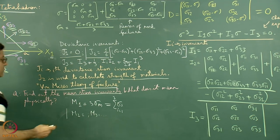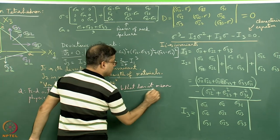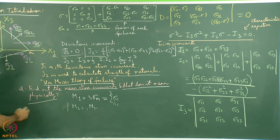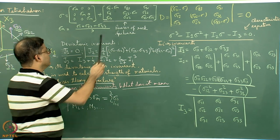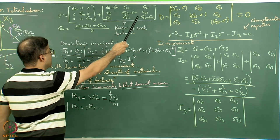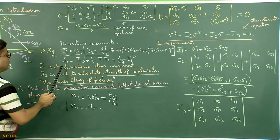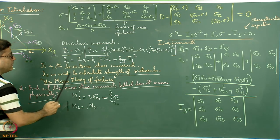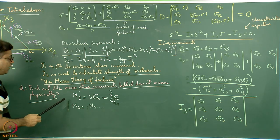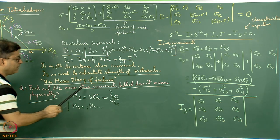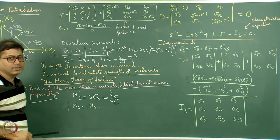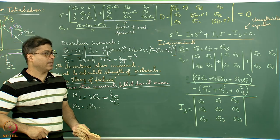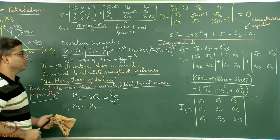The question is, what does this mean physically? In the case of the deviatoric stress matrix, the deviatoric invariants j1, j2, and j3 had meaning related to the failure of the rock. How can you interpret M1, M2, and M3 in the physical sense? It is possible to do so, and in subsequent lectures I will explain.